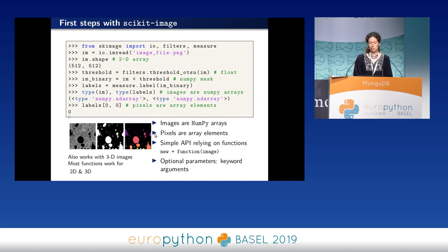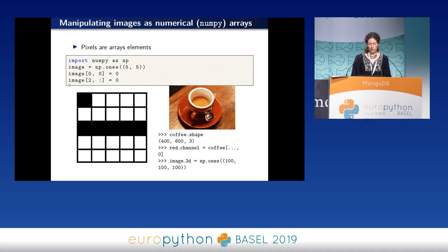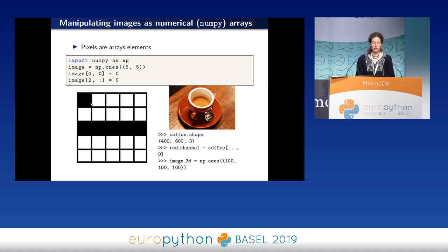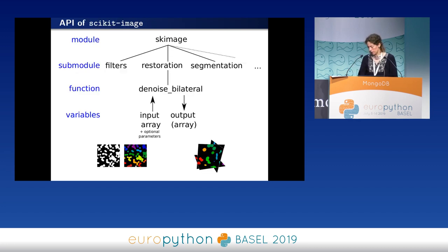The NumPy array has all that we need for image processing, because pixels are just array elements. Our API is really only functions working on images and returning images — the first argument is always a NumPy array, and then we have optional keyword arguments if you want to tune the behavior of your function. We try to have sensible default values. It works exactly with the same syntax whether you have a 2D or a 3D array.